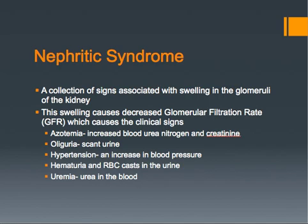Nephritic syndrome is a collection of signs associated with swelling in the glomeruli, which then causes a decrease in glomerular filtration rate, or GFR. A decreased GFR causes azotemia, oliguria, hypertension, hematuria, and red blood cell casts, which are the signs of nephritic disease.